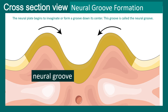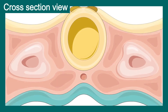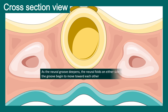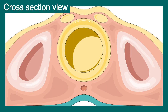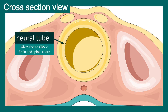Eventually the two sides of this neural groove would come closer and closer until the point they fuse together to form the neural tube. You can see the neural tube formation is almost done, and at around day 28, this should be complete. At this point, this is the neural tube, which would eventually give rise to the central nervous system — the brain and the spinal cord.